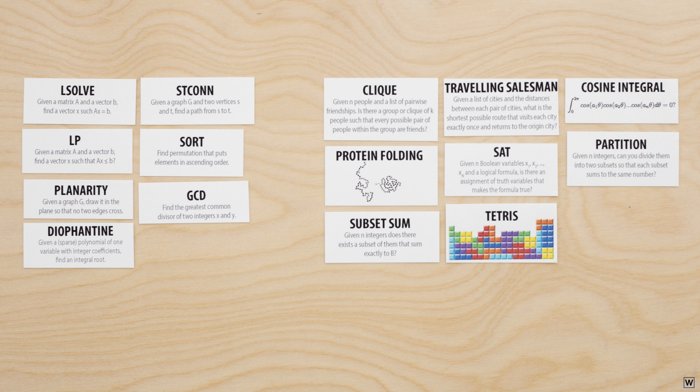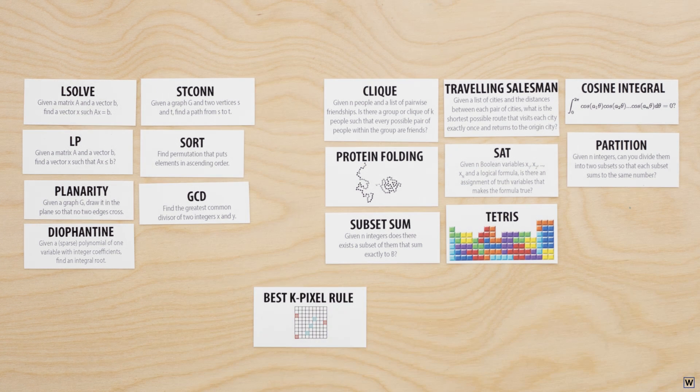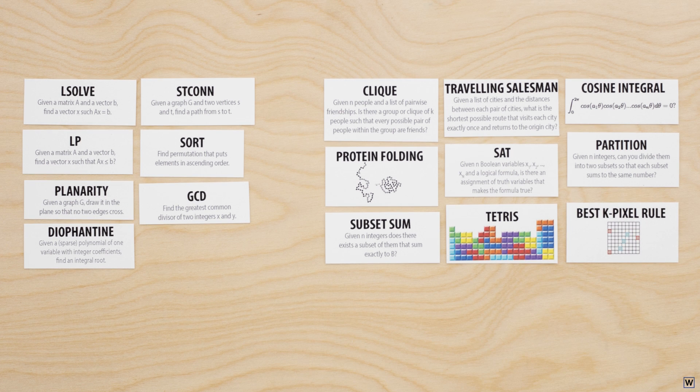Now, our research thus far suggests that our problem, finding the best k pixel rule given some labeled training examples, does not belong to the complexity class P. That is, there appears to be no solution to our problem that scales as some polynomial function with the size of our input.